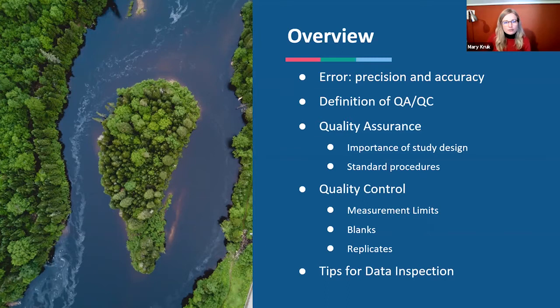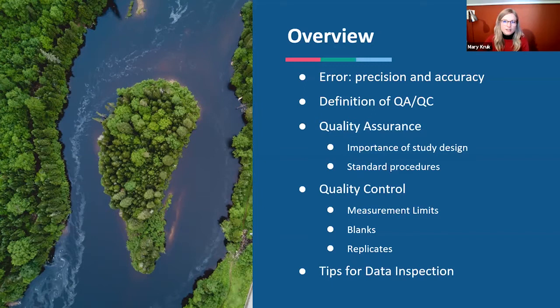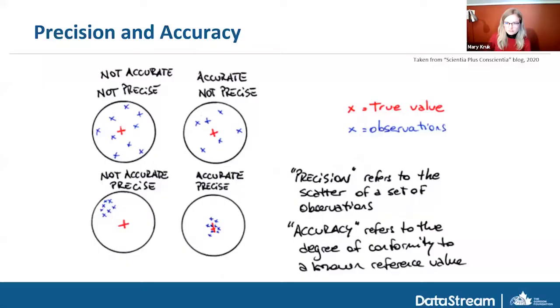Here's an overview of what we'll cover today. Megan will start by defining common terms associated with QAQC — the difference between quality assurance and quality control — and run through the steps and protocols involved. Then I'll jump back in and review some tips for data inspection, whether reviewing your own data for errors or bias, or reviewing someone else's dataset. The information will remain fairly general, but one goal is to show how Data Stream can help you through this quality control process.